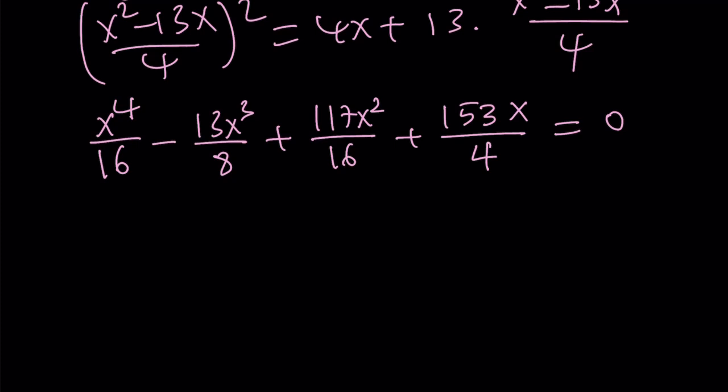Making a common denominator shouldn't be too hard. Second, x can be factored out, which means x equals 0 is a solution. Let's go ahead and multiply both sides by 16. Hocus pocus, abracadabra. We get x to the fourth minus 26x cubed plus 117x squared plus 612x equals 0.